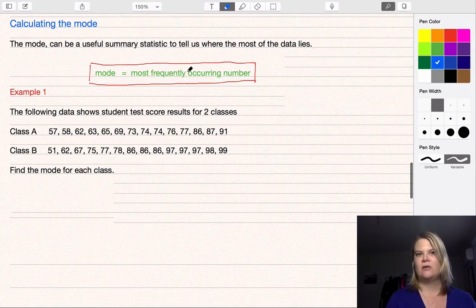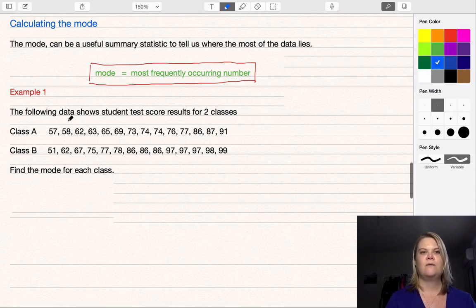Class A, all we need to do to find the mode is to find which number occurs most often. If all of the numbers just happen once each, there is no mode.